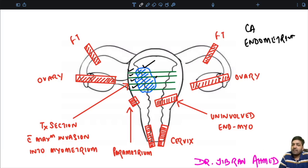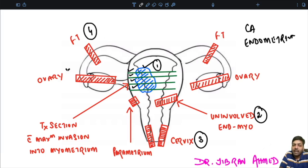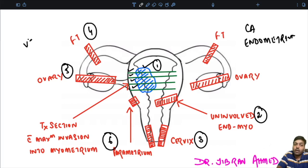After you have given 4 sections from the tumor, you have to give the section. This is number 1 section. Then you have to give the uninvolved endomyometrium, along with that you have to give the unremarkable cervix, then you have to include bilateral fallopian tubes, bilateral ovaries, along with that you have to include the parametrium as well. These are the different sections that you have to take in carcinoma endometrium and these are the sections you have to say in your exam. This is a very, very important exam viva question.